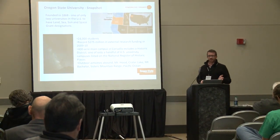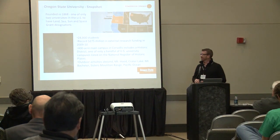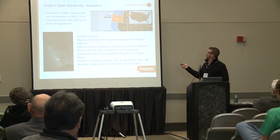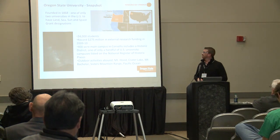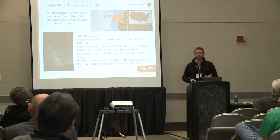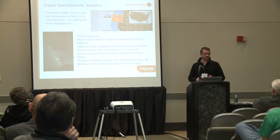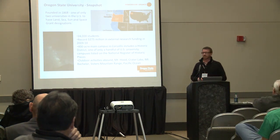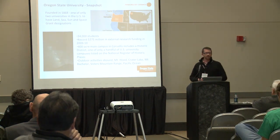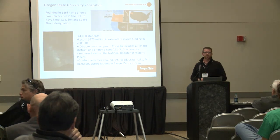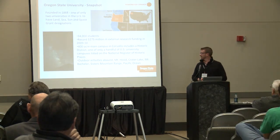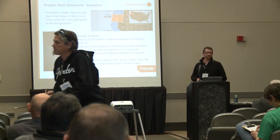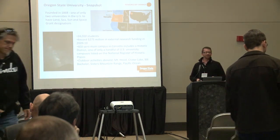Oregon State University is south of Portland by about 90 miles. We were founded in 1868 and are one of only two universities in the United States designated as a land, sea, space, and Sun Grant University — the other being Cornell. We have about 24,000 students, do a good bit of research, and have a beautiful campus in Corvallis.